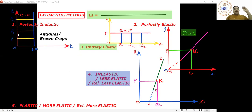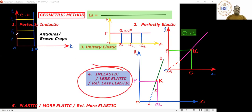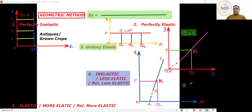What is the answer for inelastic: less than one or more than one? Less than one. For a division answer to be less than one, the denominator must be larger. So denominator OQ is the bigger value and numerator OA is the smaller value.